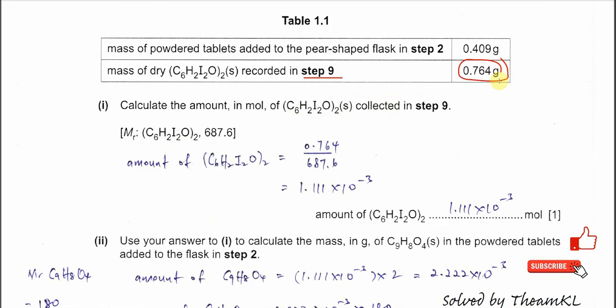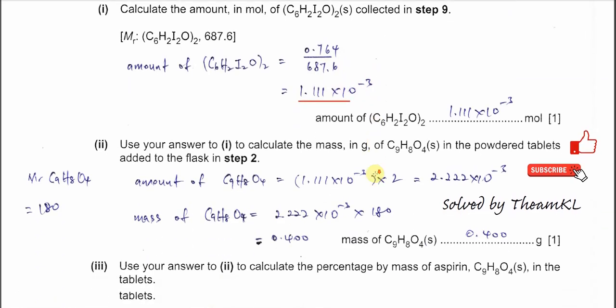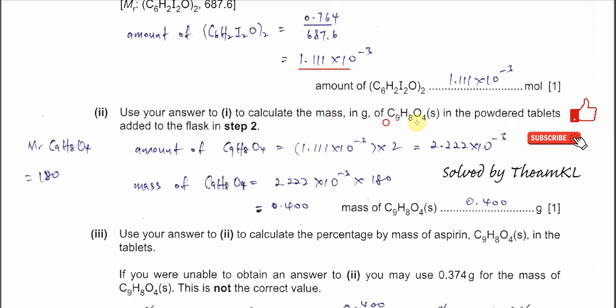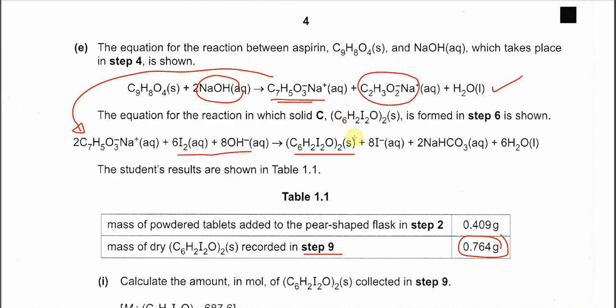After that, use your answer in part 1 to calculate the mass of aspirin in the powder tablets added to the flask. In this part you need to know the mole ratio. The solid C here is produced from 2 moles of the salt here, and this salt, the mole ratio with aspirin is 1 to 2. The aspirin needs to be 2 moles because 2 moles of the salt react with this alkaline iodine solution to produce 1 mole of solid C. Therefore the aspirin needs to be 2 moles.